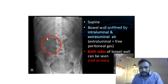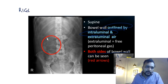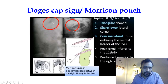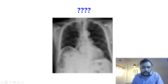Moving on to the next X-ray: the liver edges can be appreciated, known as the liver edge sign. When the walls of the bowel loops are outlined by both intraluminal and extraluminal air and both sides of the wall can be seen, this is called the Rigler's sign. When there is collection of air in Morrison's pouch, this is known as the dog's cape sign.